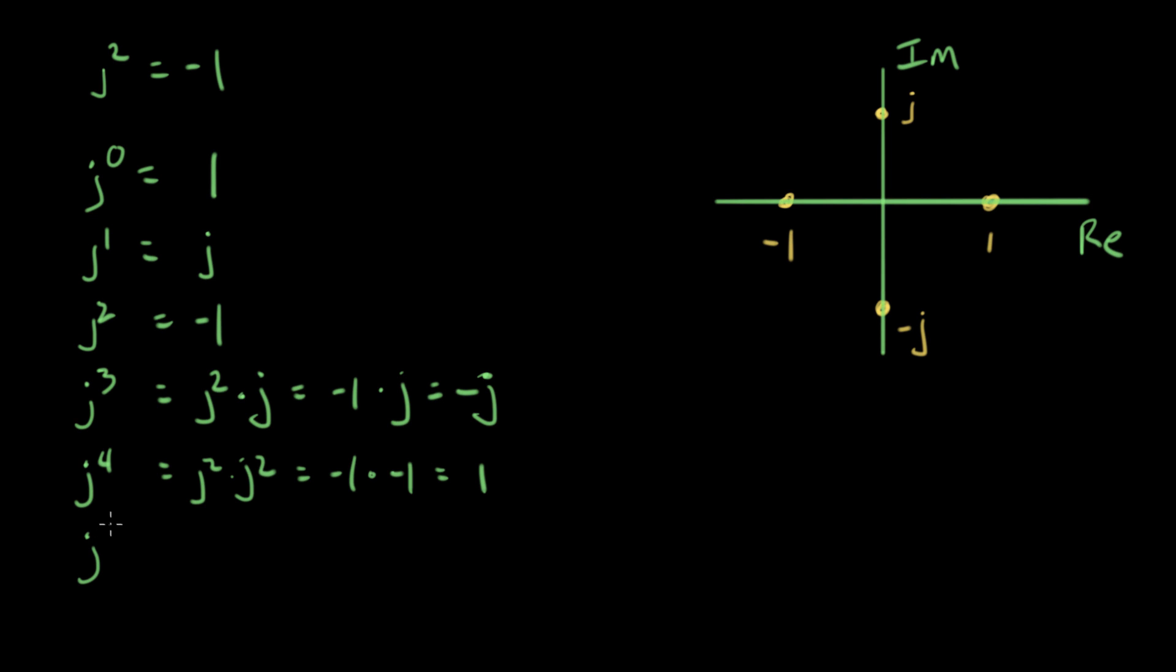Let's do one more. J to the fifth, what is that equal to? That equals J to the fourth times J. And J to the fourth is right here. It's one times J equals J. Let's go plot that one. Well, we've already plotted it. It's already right here. Okay, so you can see there's a pattern here. One, J, minus one, minus J. One, J, it's gonna be minus one and minus J. It keeps repeating.